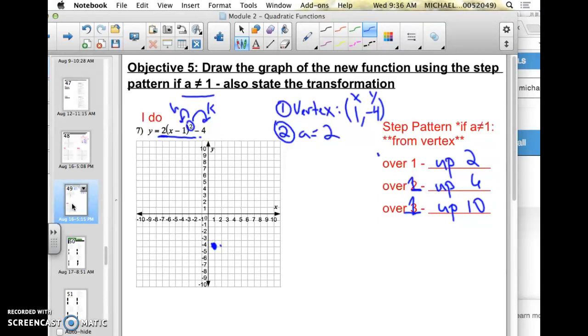From the vertex, always from the vertex, I'm going to do the first step, over 1, up 2. And I do that in both directions. And then from this new point I've created, I go over 1, up 6.